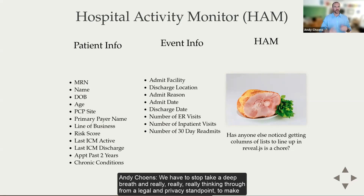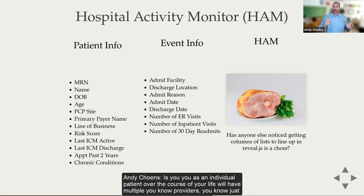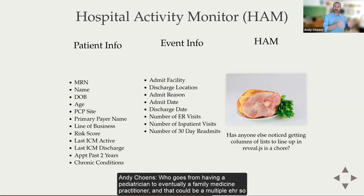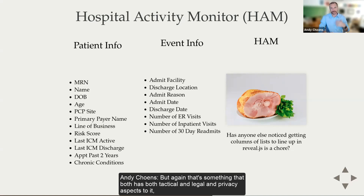We use a tool called multi-view to help track individuals. Another complexity is that over the course of your life you'll have multiple providers — a kid going from a pediatrician to a family medicine practitioner, and that could be in multiple EHRs. We're able to, on behalf of the payer groups we work with, map that progression across different EHR systems. So we can say: here is how this particular patient's healthcare has been developing over all the years they've had your insurance. But that has both technical, legal, and privacy aspects that require careful consideration.